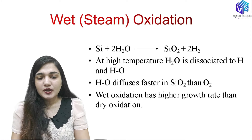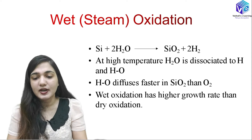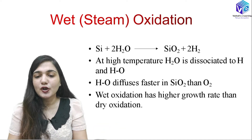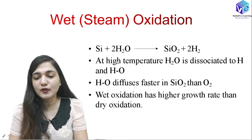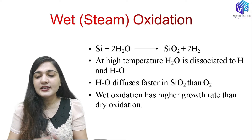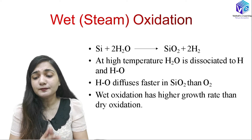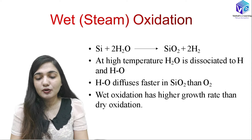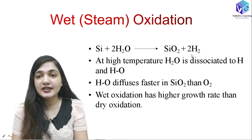In wet oxidation, silicon atoms react with water vapor. In dry oxidation, silicon reacted with oxygen gas, but in wet oxidation — also called steam oxidation — silicon reacts with two molecules of steam (H2O) and forms SiO2 while releasing hydrogen gas. At high temperature, H2O dissociates to form H⁺ and OH⁻ ions. The OH⁻ diffuses faster in SiO2 than O2, which is why wet oxidation has a higher growth rate than dry oxidation.